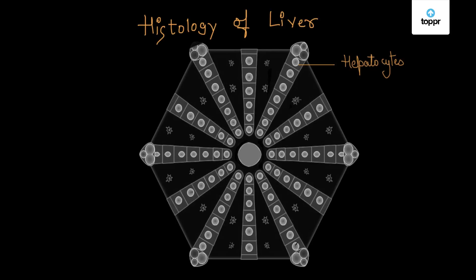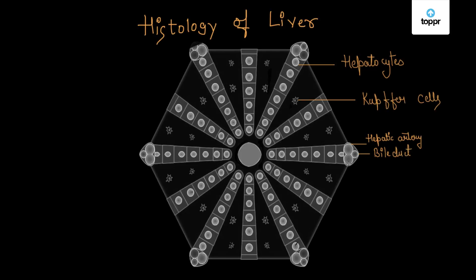There are also some cells present in the cavities called Kupffer cells. These are phagocytic cells present in the liver. At the angular parts of the lobule, there are three structures forming a portal triad: the hepatic artery, the bile duct, and the portal vein. These three together are termed the portal triad and help in the supply of blood throughout the liver.